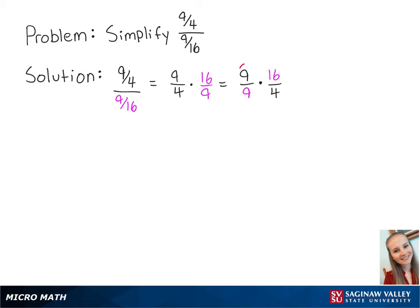Now, 9 ninths is equal to 1, and 16 fourths is equal to 4. So all of this is equal to 1 times 4, which is equal to 4. This is the final answer.